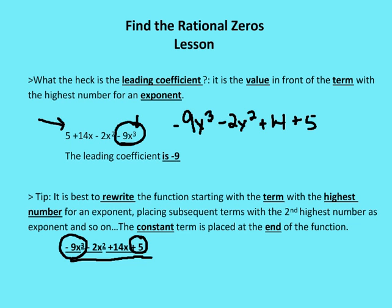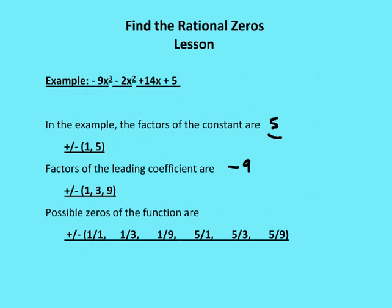So I can figure out the possible zeros based on the rational zero theorem — possible but not actual zeros — by taking the factors of the constant over the factors of the leading coefficient. I've identified 5 as my constant and negative 9 as my leading coefficient. The factors of 5 are plus or minus 1 and 5. The factors of the leading coefficient are plus or minus 1, 3, and 9. So the possible zeros are plus or minus 1/1, 1/3, 1/9, 5/1, and 5/9, giving 12 different possibilities.